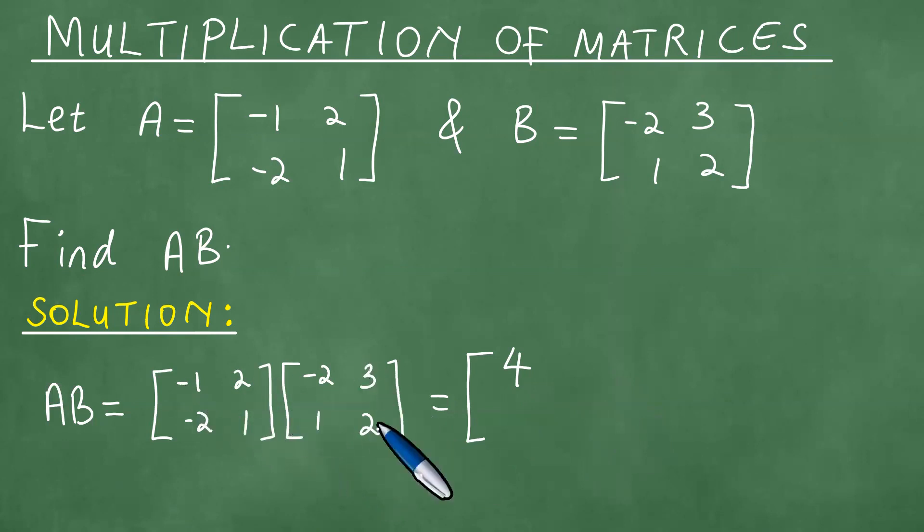Then we apply this row by this column. We have -1 times 3, which is -3, plus 2 times 2, which is 4. So we have -3 plus 4, which is exactly 1.